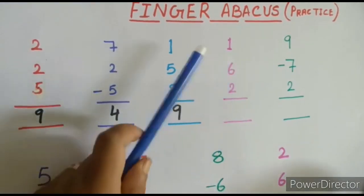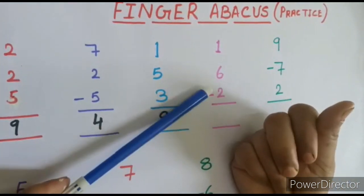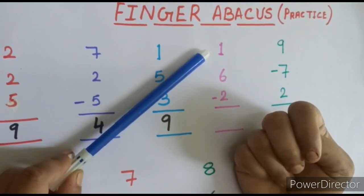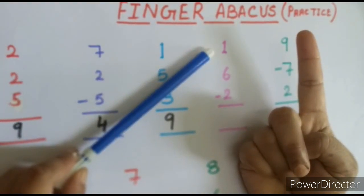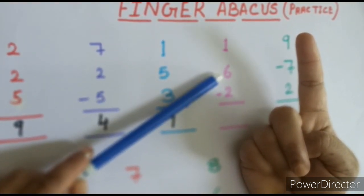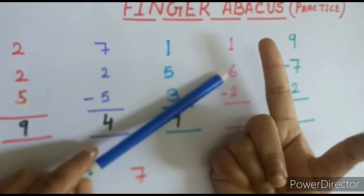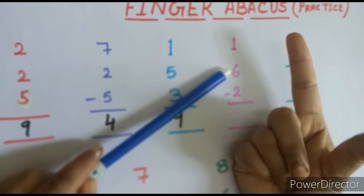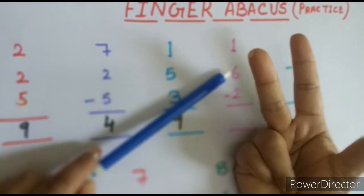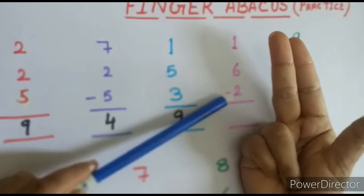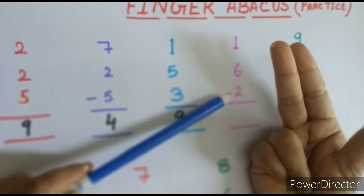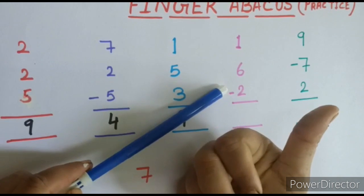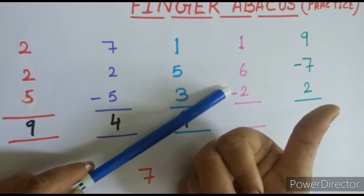Next example: we close the fingers first. Plus 1 — just open one finger representing number 1. Then plus 6 — we open the thumb which represents 5, then open 1 more finger because the number is 6: so 5, 6, then open one more to get 7. Then minus 2 — for subtraction, close the fingers. Close 2 fingers. The answer is 5.